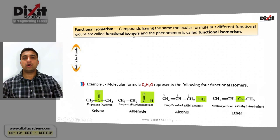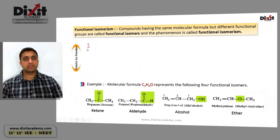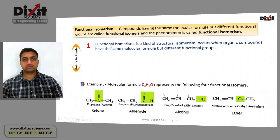Organic compounds having the same molecular formula but different functional groups are called functional isomers, and the phenomenon is known as functional isomerism. Functional isomerism is a kind of structural isomerism that occurs when organic compounds have the same molecular formula but different functional groups.